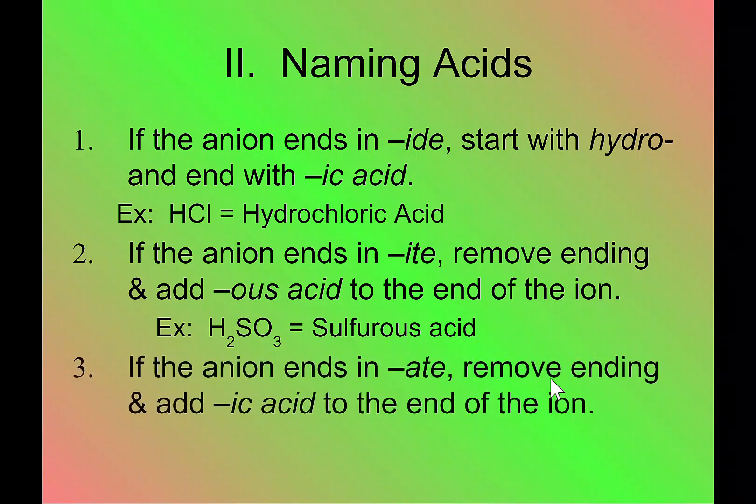And then lastly, number three, if the anion ends in -ate, remove the ending, add -ic acid to the end. Now notice no hydro. So NO3, which is nitrate, you add the hydrogen to the front, you get nitric acid. Notice no hydro. So both the -ide's and the -ate's are both going to have -ic acid. Hydro -ic acid tells you it's an -ide, binary acid. No hydro in the front tells you it's an -ate. It comes from an -ate ion. Let's look at some examples.